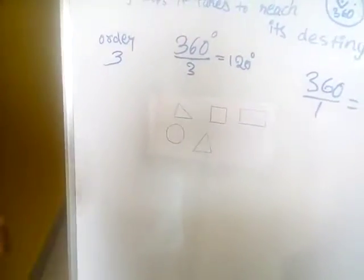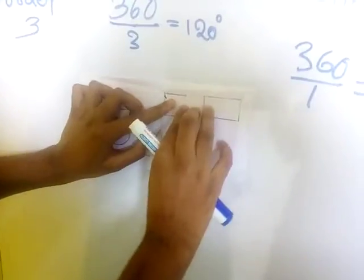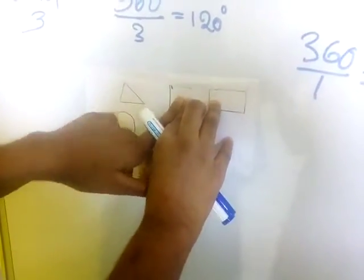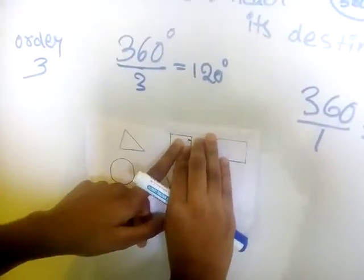Now we would see square. So how many turns it will take to reach this place? 1.